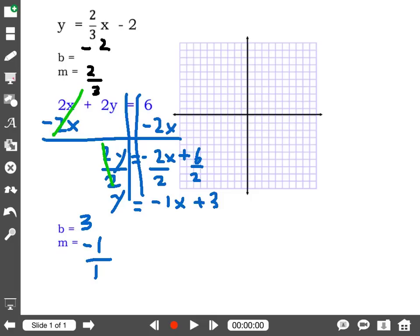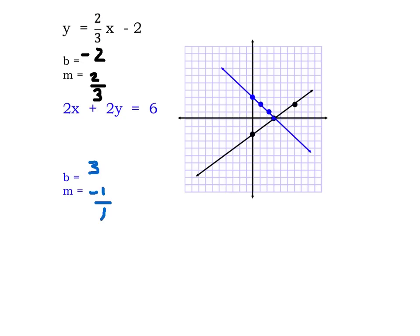I'm going to graph my second equation in blue, and my starting point will be at positive 3 on the y-axis, but that slope is negative 1 over 1, so down 1, right 1, down 1, right 1. Now that my lines are graphed, remember we are looking for the point of intersection, and I can see that the blue line and the black line intersect, or cross one another, at the point 3, 0.